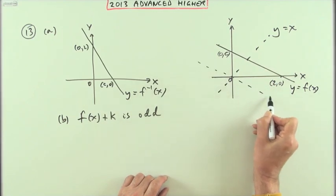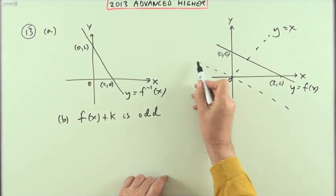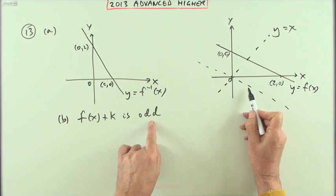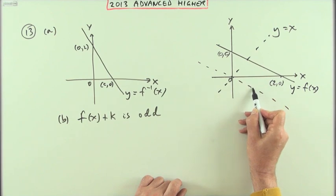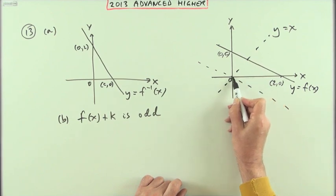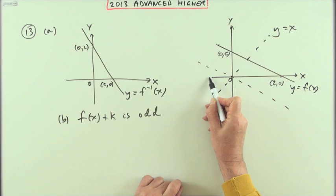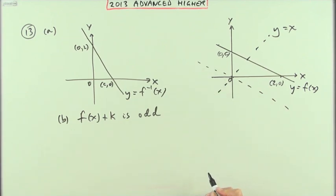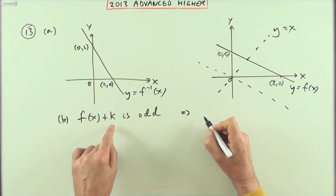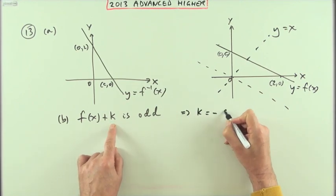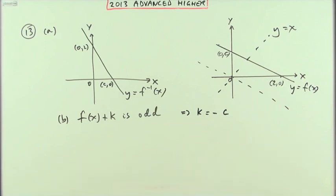If I drop that line down until it passes through the origin, then I've achieved an odd function, because whatever value of x I've taken this side, I'll get a certain answer, and if I take the corresponding value of x on the opposite side, I'll get the same answer but with the opposite sign. So that will happen when I drop it down by the amount c. For this part, f(x) + k is odd means that k would have to be negative c.